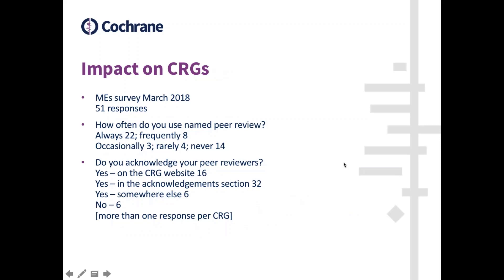We know there are over 50 ways that Cochrane groups currently run their peer review processes. To assess the impact on CRGs, we did a short survey of managing editors in March of this year, from which we received 51 responses — nearly every single review group within Cochrane. We asked firstly how often they use named peer review, and secondly whether they acknowledge their peer reviewers. Almost 30 review groups — more than half — always or frequently use a named peer review process. However, 14 groups have never run a named peer review process.